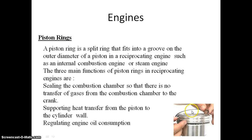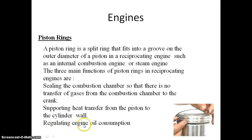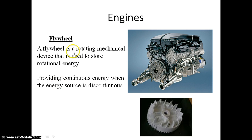The piston ring is fitted around the piston. The piston ring is used for sealing the combustion chamber so that there is no transfer of gas from the combustion chamber to the crankcase. It also supports heat transfer from the piston to the cylinder wall, helping regulate the engine temperature. The flywheel is a rotating mechanical device used to store rotational energy, providing continuous energy when the engine's power source is discontinuous.